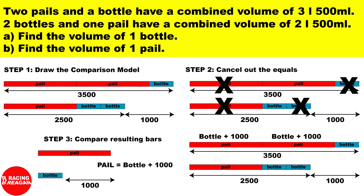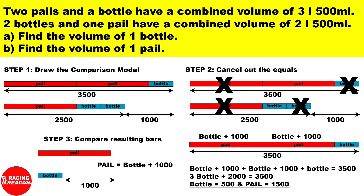Now substitute back into the first model: pill equals bottle plus 1000, so replace the pill with bottle plus 1000. The model becomes: bottle plus 1000, plus bottle plus 1000, plus bottle equals 3500. That gives three bottles plus 2000 equals 3500, so bottle equals 500 ml. Therefore, pill equals 500 plus 1000, which is 1500 ml.